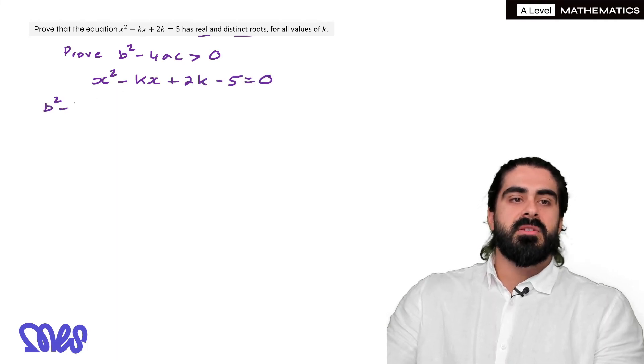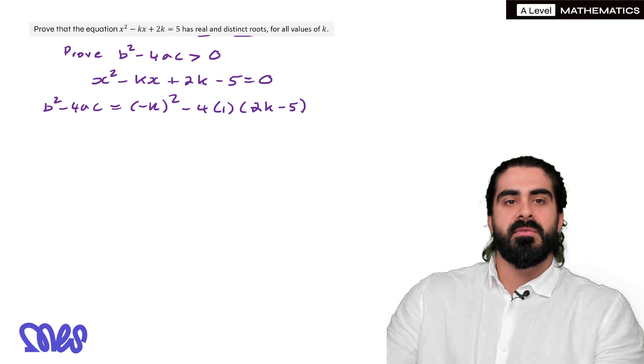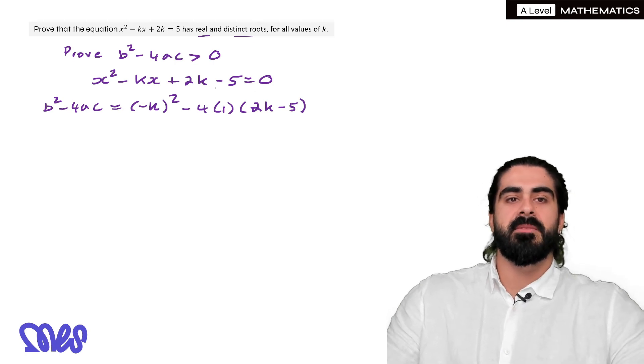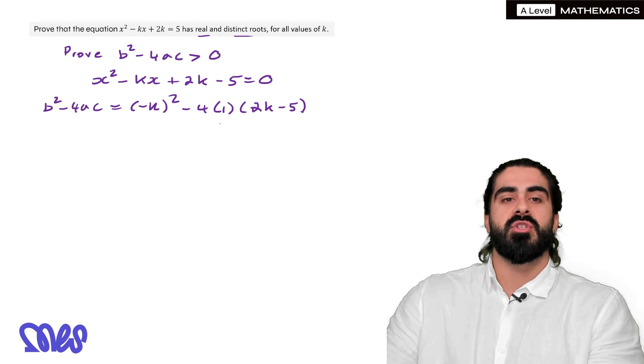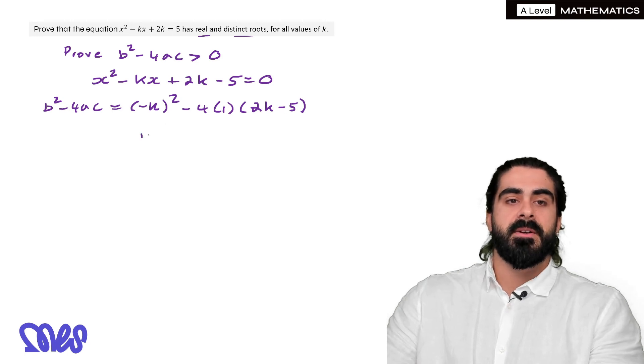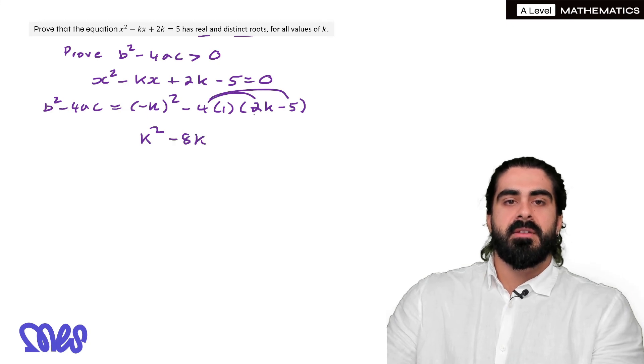So in this case b squared minus 4ac is going to be minus k squared minus 4, a is 1 and c is 2k minus 5. Don't forget the 2k, it's easy to just write down minus 5. So it's the term independent of x. Now we're not going to say it equals or is bigger than or less than anything because we're going to prove that this expression is always positive. So we have k squared then we have minus 4 times 2k is minus 8k then we get plus 20.